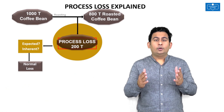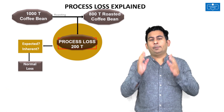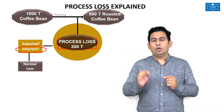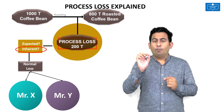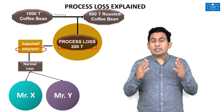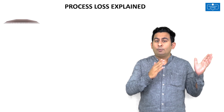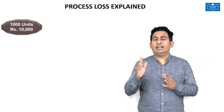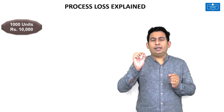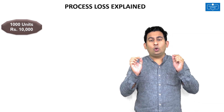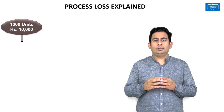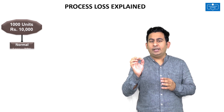Normal loss is a loss inherent to the process, which means whether Mr. X or Mr. Y undertakes the process, both will have to suffer the normal loss. Let me explain the treatment of normal loss and abnormal loss in cost accounting with an example. We are introducing 1000 units at a total process cost of 10,000 rupees, and the normal loss of this process is 20%.